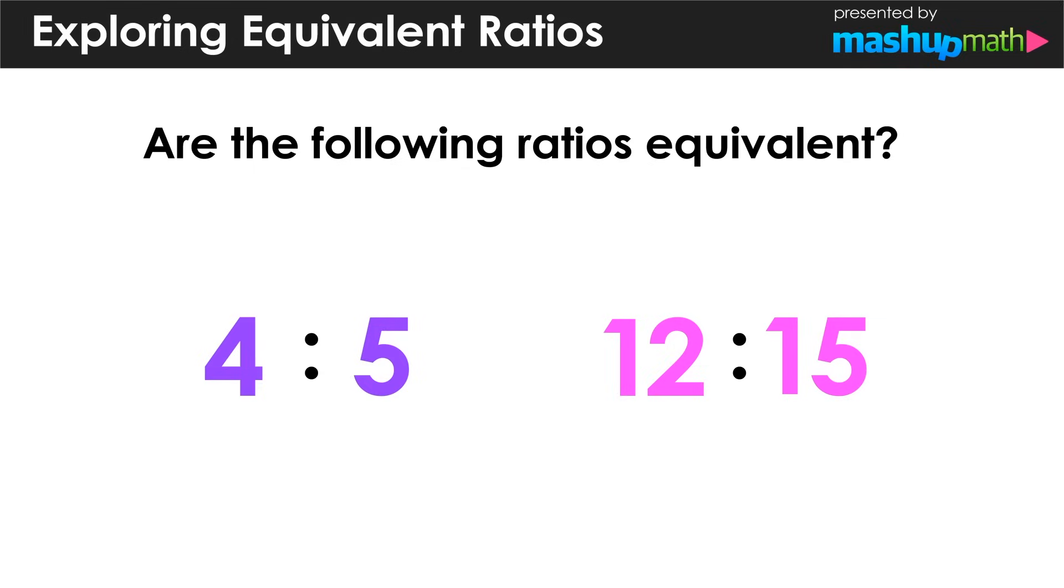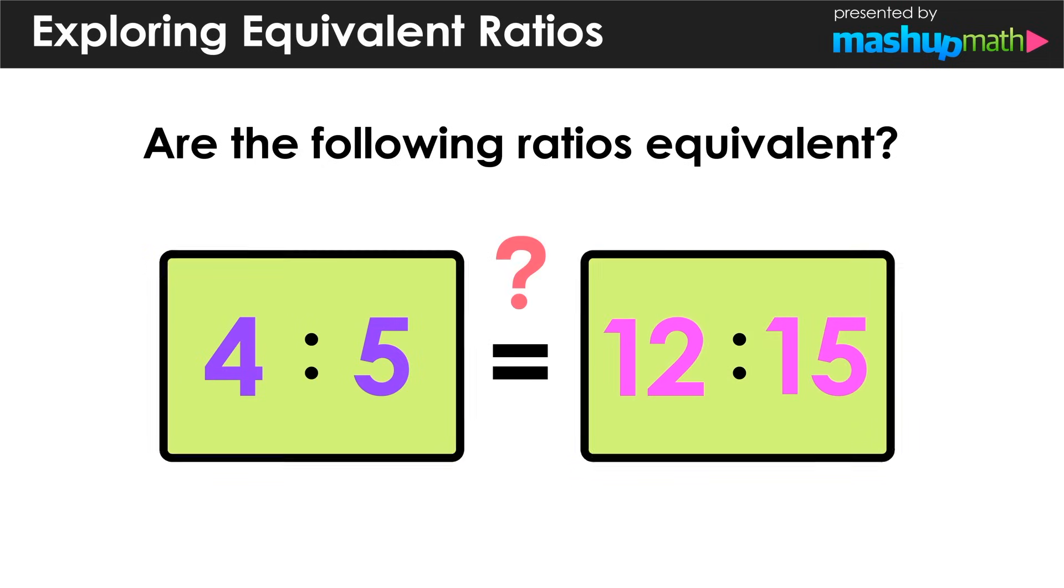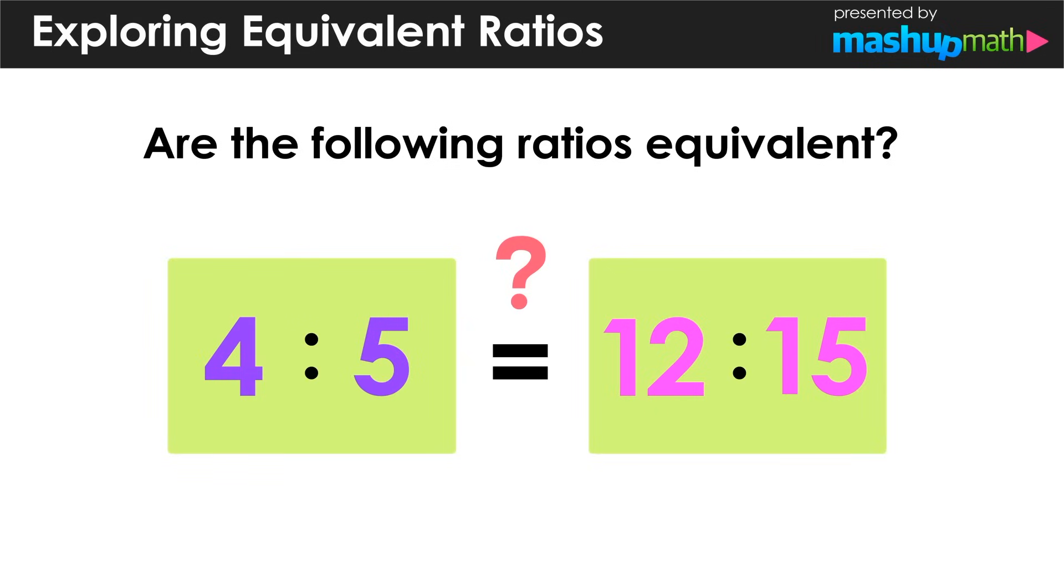Now let's get some practice determining whether or not two ratios are equivalent. In this case, we have the ratio of 4 to 5 and the ratio of 12 to 15, and we want to see if they are equivalent. A ratio can be written in fraction form with a numerator and denominator, so we'll start by transforming these ratios into fractions.